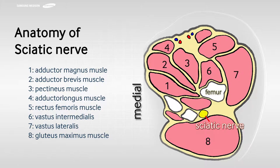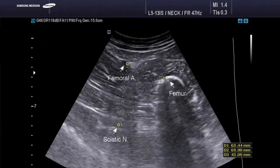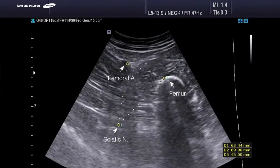The anterior approach to the sciatic nerve targets the nerve in the proximal thigh at the level of the lesser trochanter of the femur. This is an ultrasound image of the sciatic nerve.